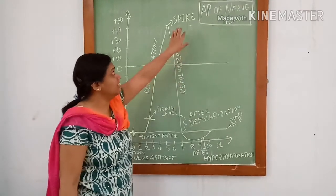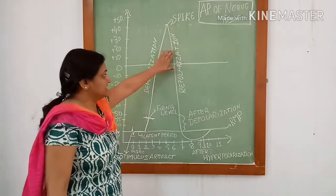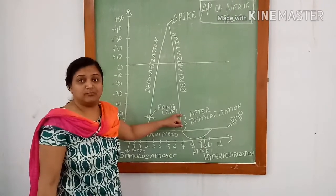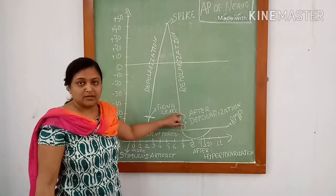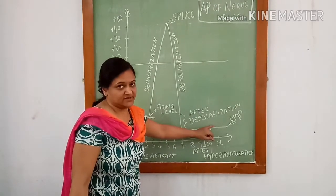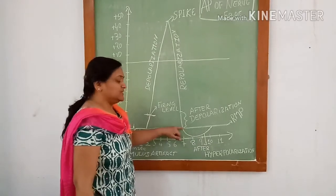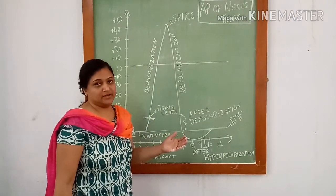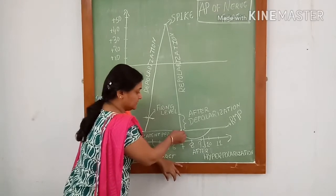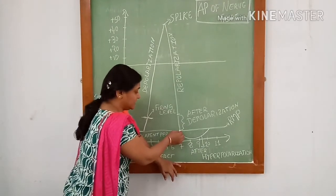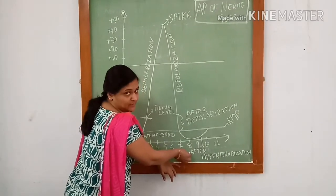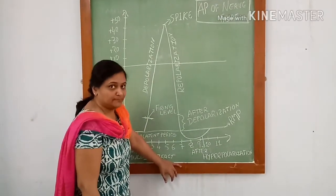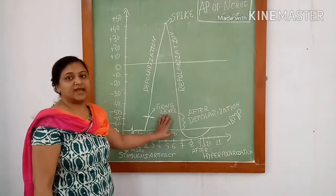This rapid depolarization and repolarization is called the spike. During the repolarization phase at minus 55 mV, there is slow efflux of potassium out of the membrane; this is known as after-depolarization. When it reaches minus 70 mV, there is still more efflux of potassium out of the membrane, so the action potential goes beyond minus 70 mV. This is known as after-hyperpolarization. It comes back to the normal level by the sodium-potassium pump. This whole process is known as action potential.